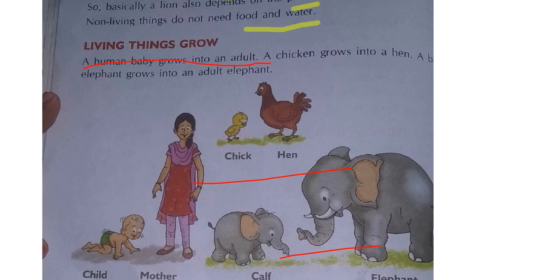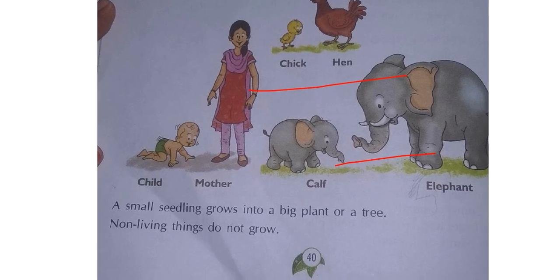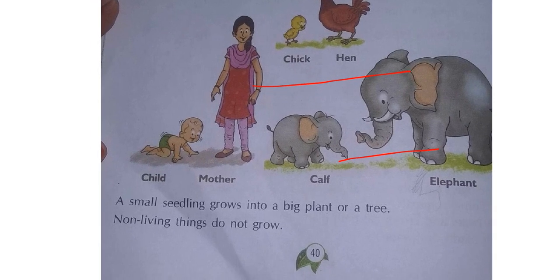A human baby grows into an adult. A chick grows into a hen. A baby elephant grows into an adult elephant. A small seedling grows into a big plant or tree. If you put a small seed into the soil, day by day it grows bigger and bigger until after some years it becomes a very big tree.